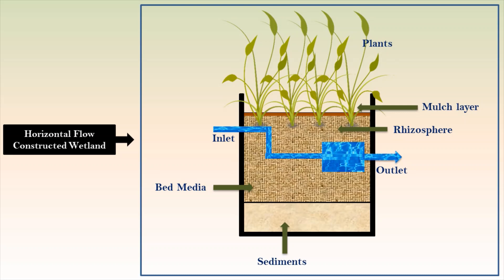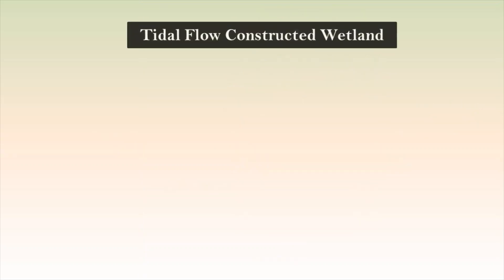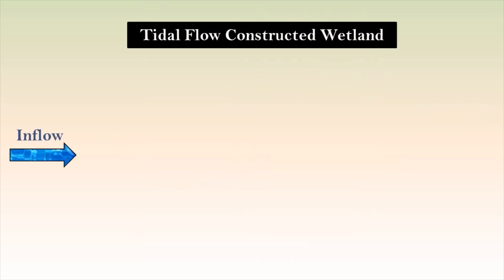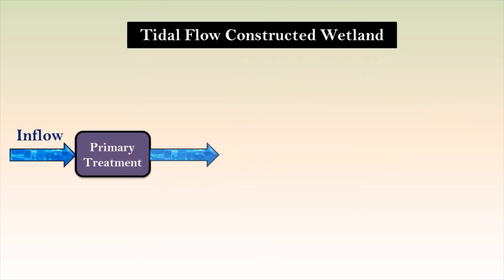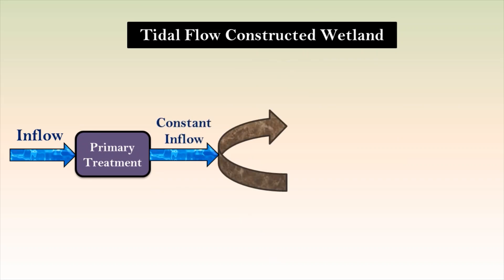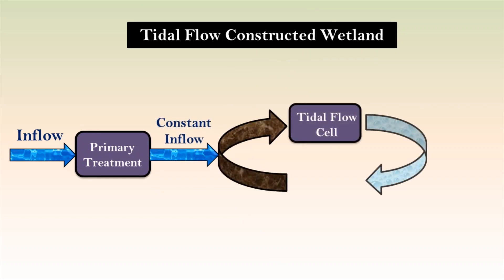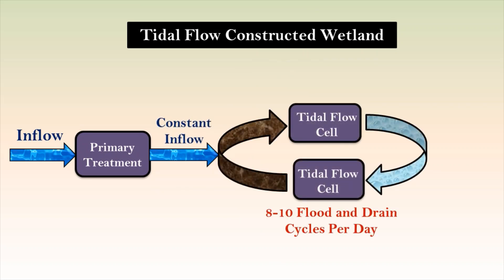Horizontal flow constructed wetlands require five to ten square meters per population equivalent when compared to vertical flow constructed wetlands, but they are efficient in denitrification. In order to increase aeration in the system, tidal flow constructed wetlands are effectively used, but they increase the energy footprint.